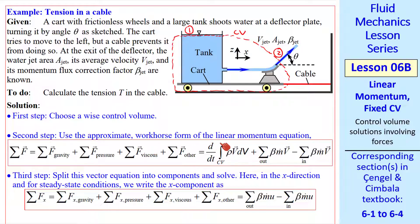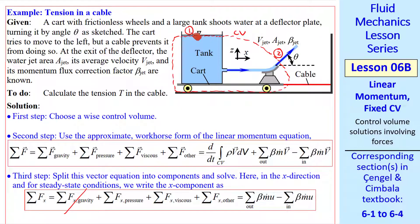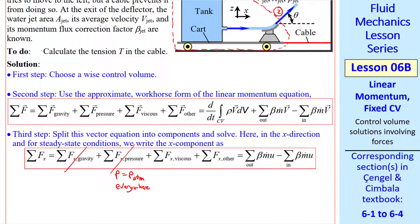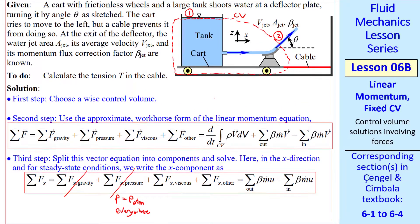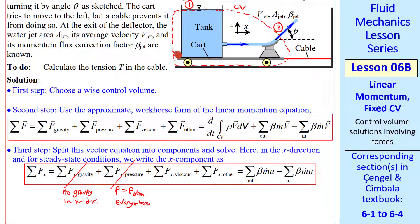The second step is to use the approximate workhorse form of the linear momentum equation, which I've rewritten here. And as we typically will do, we'll split this into components. Here we write the x component, which is all we care about because the cable is in the x direction. If this cable were at some angle, we would have to calculate both an x and a z component of the tension. So let's analyze this. Again, there's no gravity in the x direction. The pressure here is atmospheric. In fact, the pressure everywhere is atmospheric. And so the pressure term goes away. I'll put my reason underneath. P equal P atmosphere everywhere. So all the pressure terms cancel out. What about the viscous forces? Well, there certainly are viscous forces along this plate, but those are inside our control volume. When we're analyzing control volume problems, we really don't care what's inside the control volume. Since our surface does not slice through this plate, the viscous terms are zero. My reason is that we chose a wise control volume. If our control volume would have gone along the plate, we would have a much more difficult time.